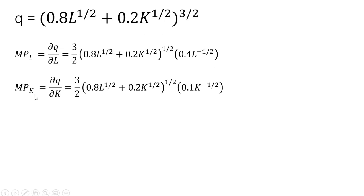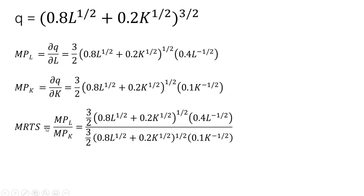We get the marginal product of capital using a very similar partial derivative. Now we form the marginal rate of technical substitution, which is the marginal product of labor divided by the marginal product of capital. A lot of things cancel here: the 3/2 cancels, and everything in parentheses appears in both numerator and denominator, so that cancels too.